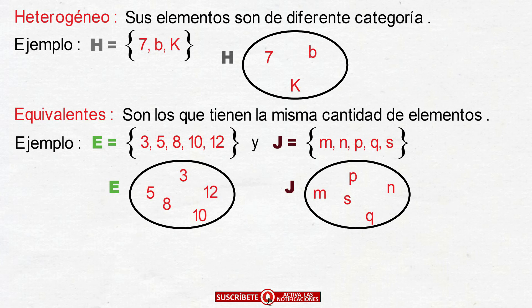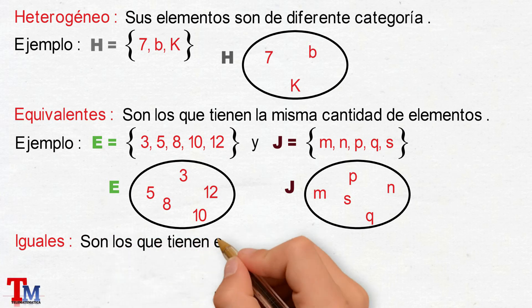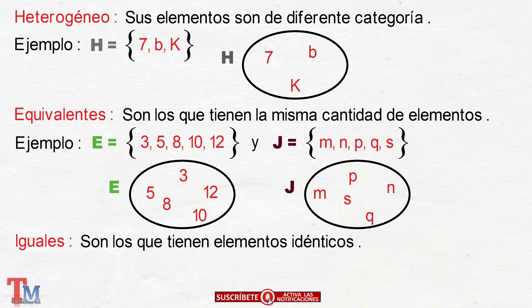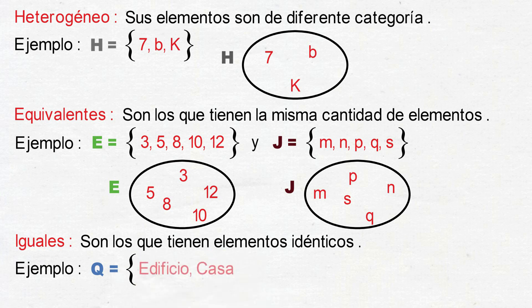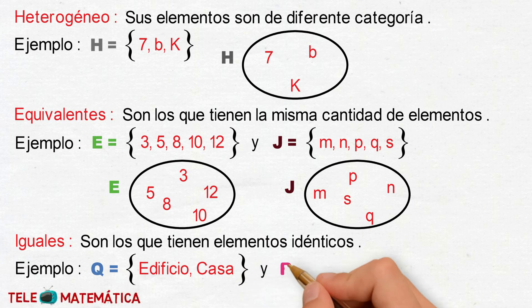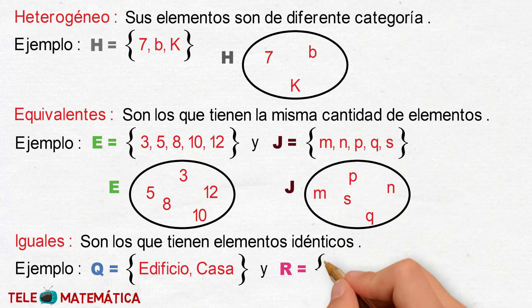Y por último, veremos los conjuntos iguales, que se definen como: son los que tienen elementos idénticos. Por ejemplo, el conjunto Q, definido por ciertos elementos, y el conjunto R, definido por esos mismos elementos.